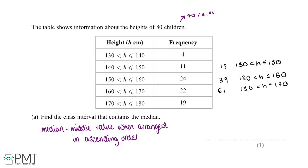So now looking at these values, when arranged in height order, the 39th child up until the 61st child will be between 160 and 170 centimetres. This means this is where the 40th and 41st child will be. So the class interval that contains the median will be 160 is less than the height, which is less than or equal to 170 centimetres.